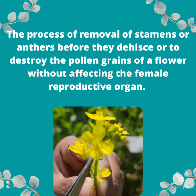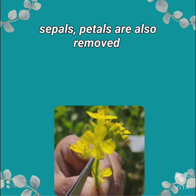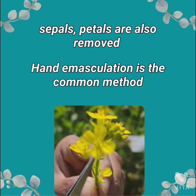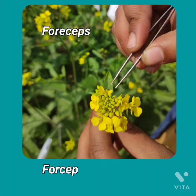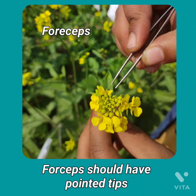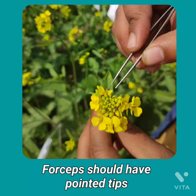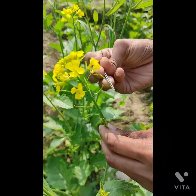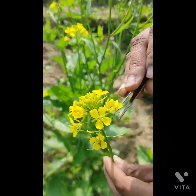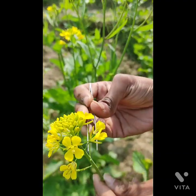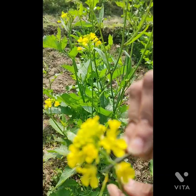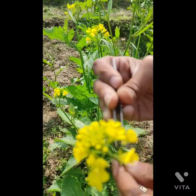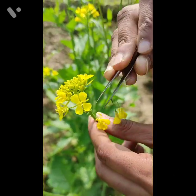Sepals and petals are also removed. Hand emasculation is the most common method in mustard. To do emasculation, forceps is needed — remember, forceps should have pointed tips. To do emasculation, select a good female plant and remove the fully siliqua open flowers from the stem or from the branch in which we need to do emasculation.